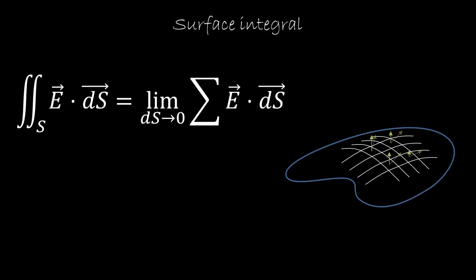In the same way that we defined the line integral to ask what is the component of a field along a line, we define the surface integral to tell us what is the component of a vector field going through a surface. We take the surface, divide it into many pieces, take the component normal to each piece, multiply that by the area of each piece, sum them up, and take the limit as the pieces become as small as possible. If the vector field were the velocity of a fluid, it would tell us how much fluid flows through the surface. We could also divide by the area of the surface to get the average component of the vector across that surface.